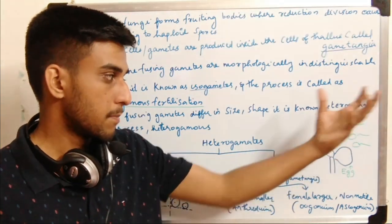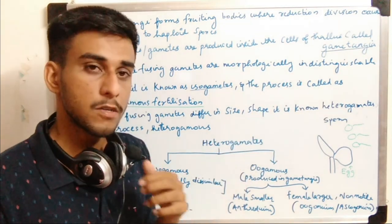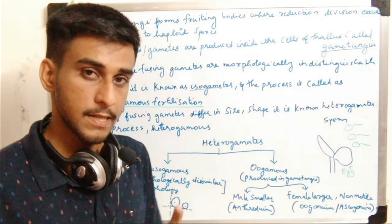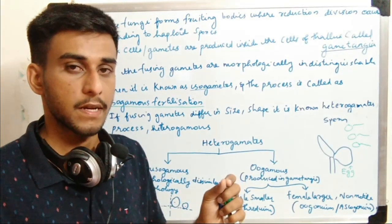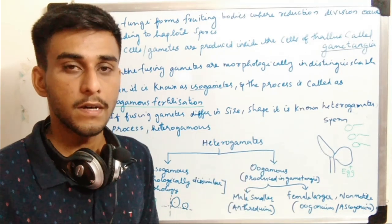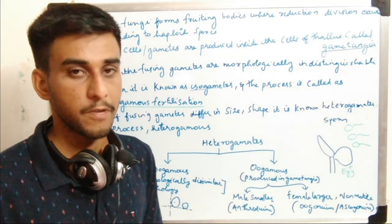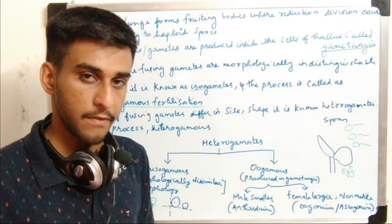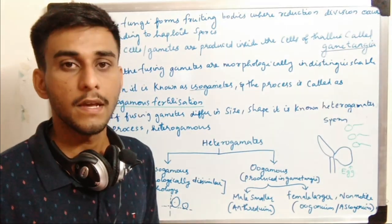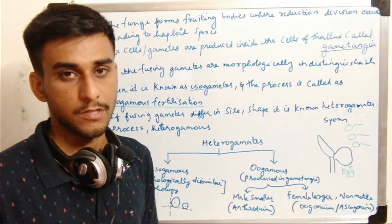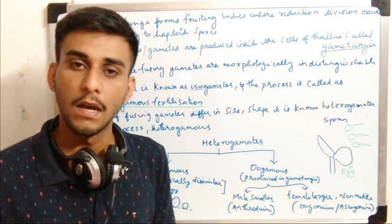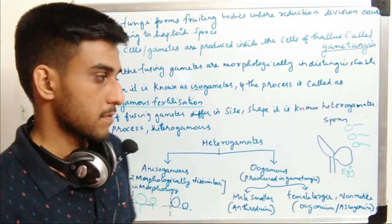According to the oogamous type of fertilization, the male gametes should reach the female gametes. How they reach depends on certain conditions: some have flagella and move on their own; some come by external currents like air current or water current, or by means of certain animals.